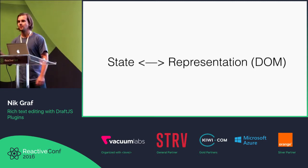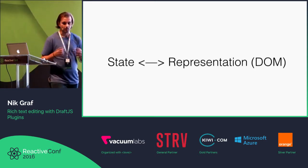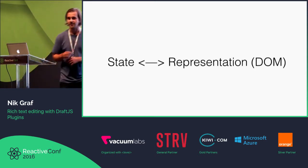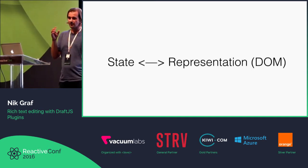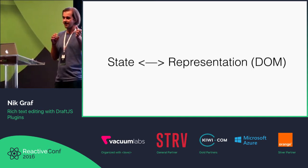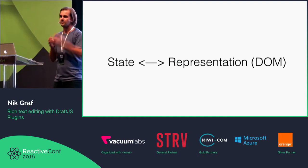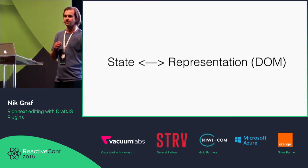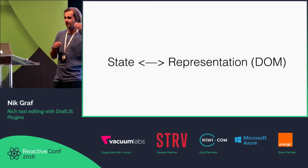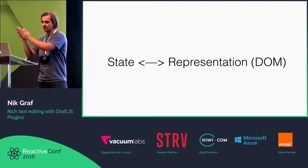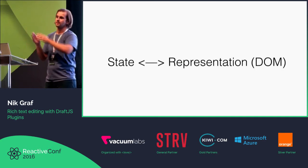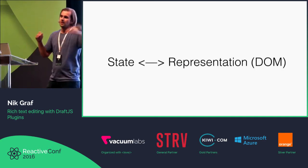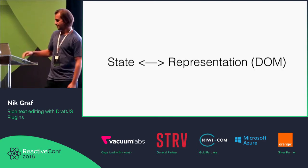The cool part about DraftJS, compared to a lot of other rich text editing solutions, is that it matches the state with the representation. So every time you change something in the state, you actually update the DOM as well. And whenever you change something in the representation in the DOM, it updates the state.